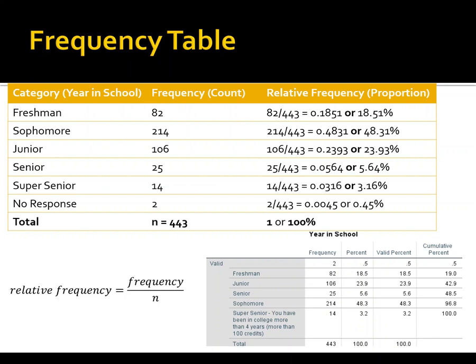In the lower right-hand corner of the slide, there's another frequency table created using SPSS statistical software. In the first column we have the category — one blank area represents non-responses — and the categories are arranged alphabetically. The frequencies match up with the hand-calculated table. SPSS calls the relative frequencies "percent" rather than relative frequency, and they're only rounded to one decimal place, which is why they look slightly different. For example, freshmen show 18.5% in SPSS versus 18.51% in my hand calculations.